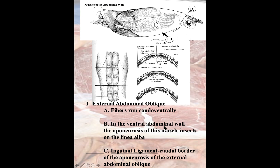The caudal portion of this muscle's aponeurosis is called the inguinal ligament. So the external abdominal oblique fibers run caudal-ventrally, with costal and lumbar portions both inserting into the linea alba, which is the midline structure we can see in the middle of the rectus abdominal muscle. This line is called the linea alba.